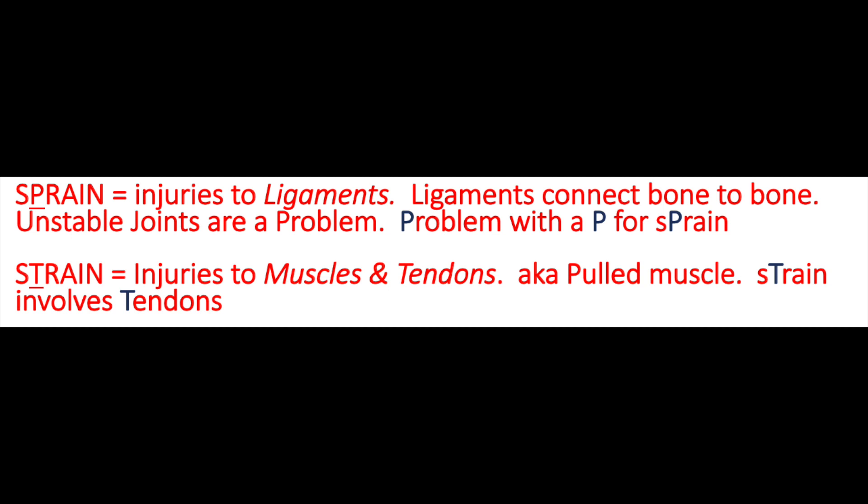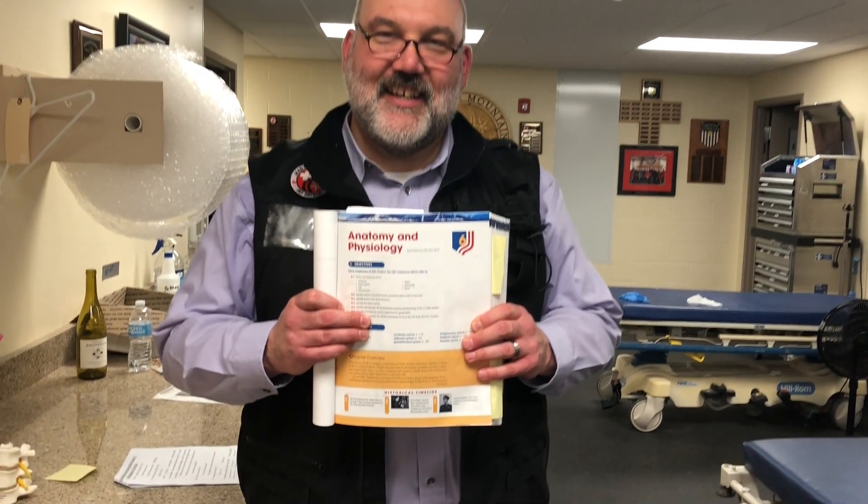That picks up our anatomy and physiology review. One body system that gets honorable mention is the muscular system. A common point of confusion is the difference between a sprain and a strain — sprain with a P, strain with a T. Most of us have said we've sprained our ankle. A sprain is a ligament injury when we twist an ankle in such a way that a ligament gets sprained. A ligament connects bone to bone, and if it's damaged it makes the joint unstable — that's a problem with a P, so that's a sprain with a P. A muscle strains — strain with a T. For more information on this topic, please refer to chapter six in the OEC manual, fifth edition.